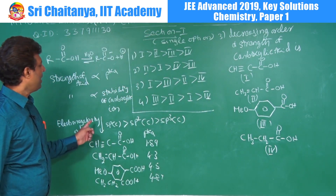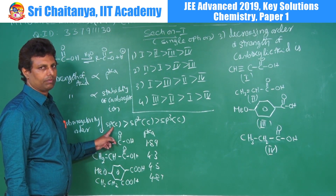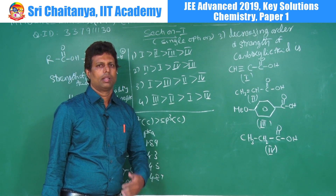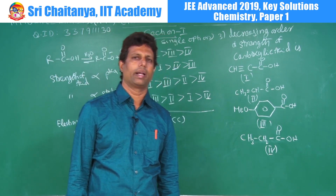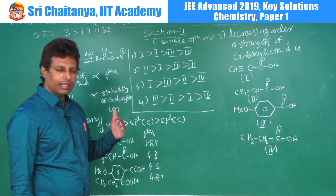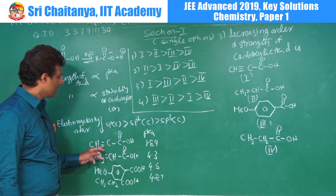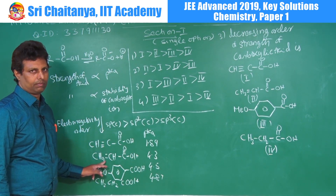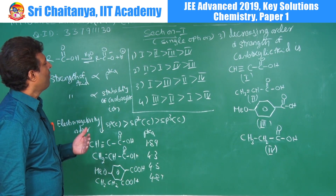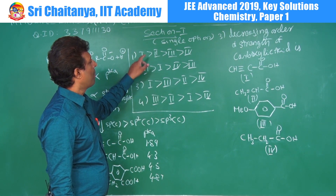Strength of acid is directly proportional to stability of the carboxylate anion — the carboxylic acid that gives the most stable carboxylate anion is the stronger one. Electronegativity of sp carbon is more compared to sp2 carbon, and sp2 is more than sp3. For the first two compounds — acetylenic and vinylic — the acetyl carboxylate anion is more stable, so carboxylic acid 1 is more acidic than carboxylic acid 2.